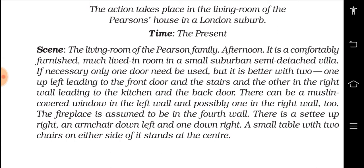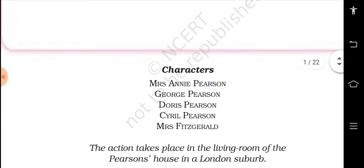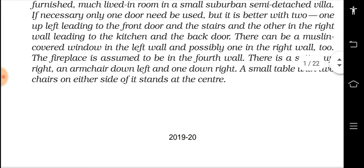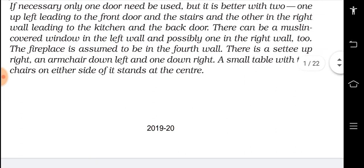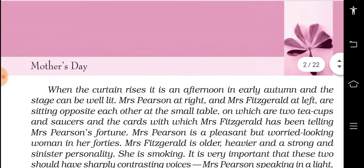There is a settee up right — 'settee' means sofa or couch — and an armchair down left, and one down right, so two chairs facing each other, where Mrs. Pearson and Mrs. Fitzgerald will sit. A small table with two chairs on either side stands at the center. So this is the setting of the play.